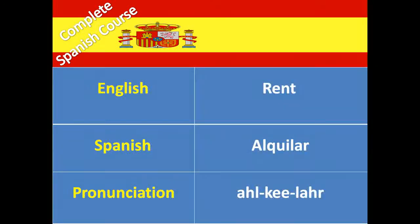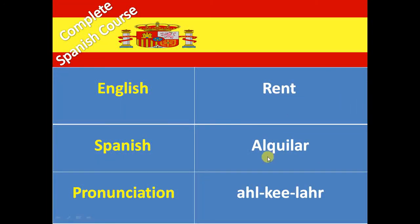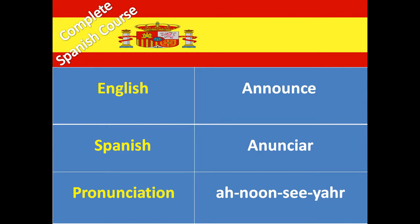Rent is called alquilar. Alquilar — here 'u' is silent. Why? Because in Spanish, if 'u' comes between 'q' and 'i', then 'u' is silent. This rule has been covered in my second video lecture, so if you don't remember, watch my second video lecture to know the rules of letters.